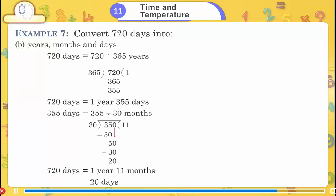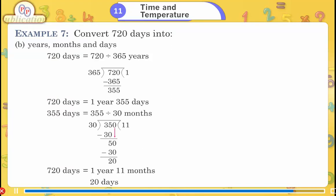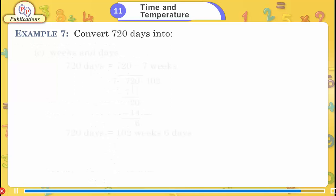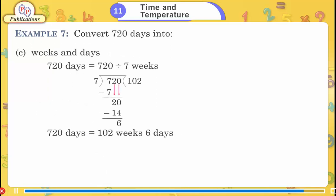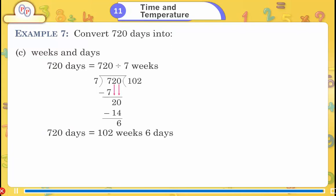Continuing Example 7B: 355 days = 355 ÷ 30 months. So 720 days = 1 year, 11 months, 20 days. C) Into weeks and days: 720 ÷ 7 = 102 weeks, 6 days.